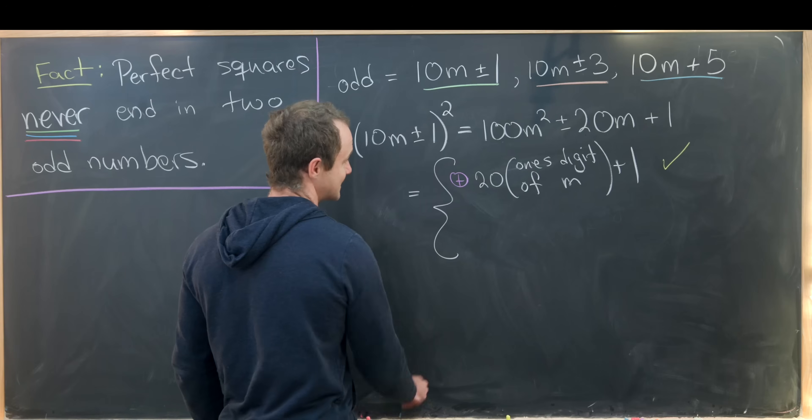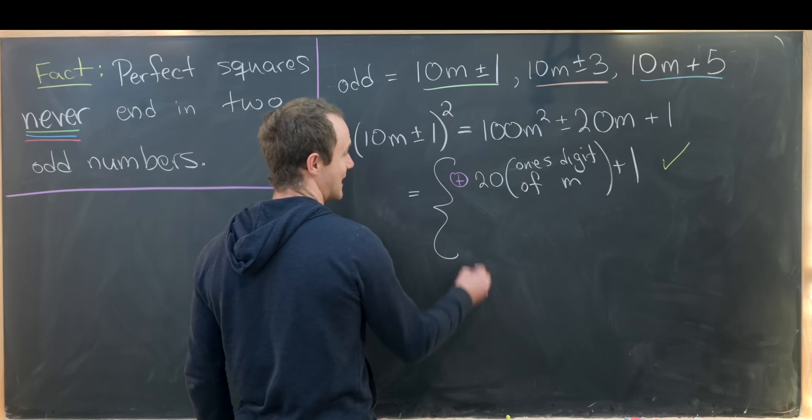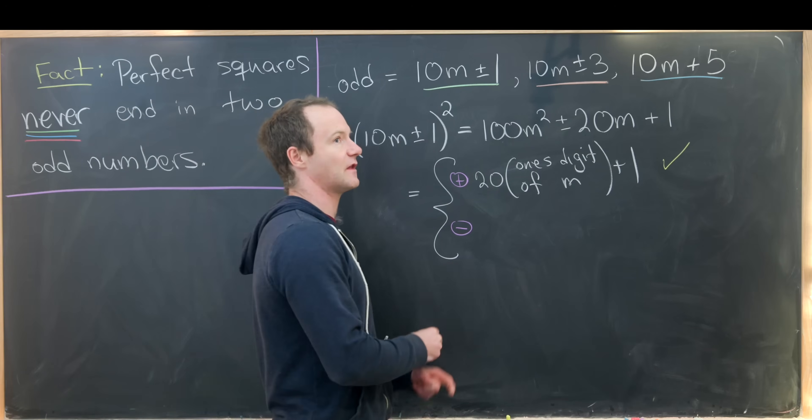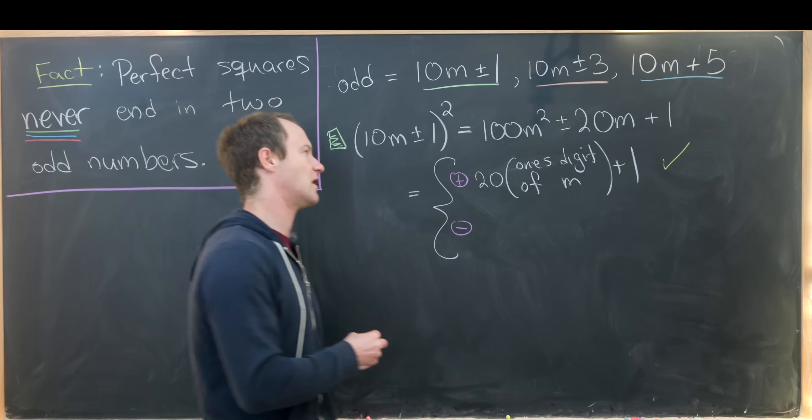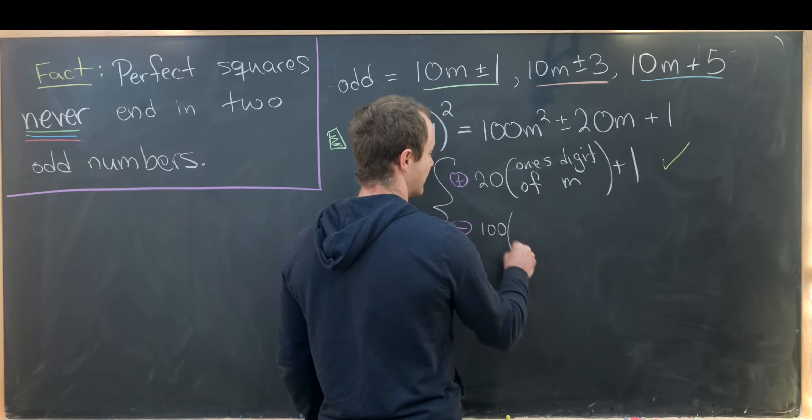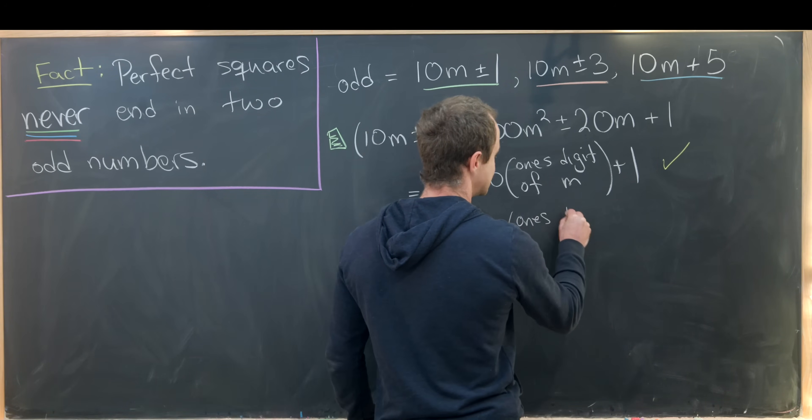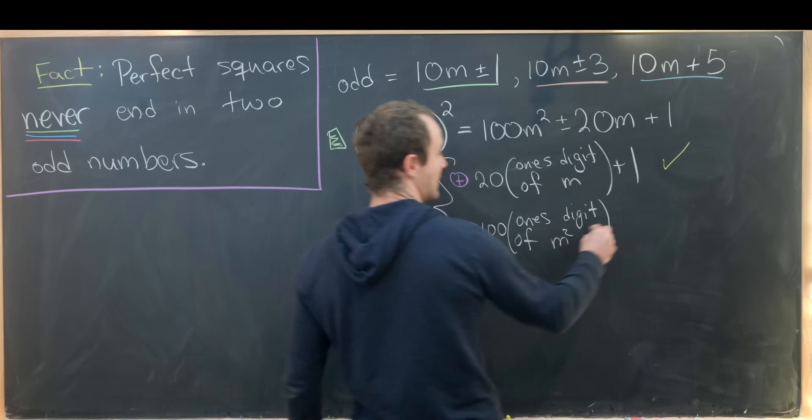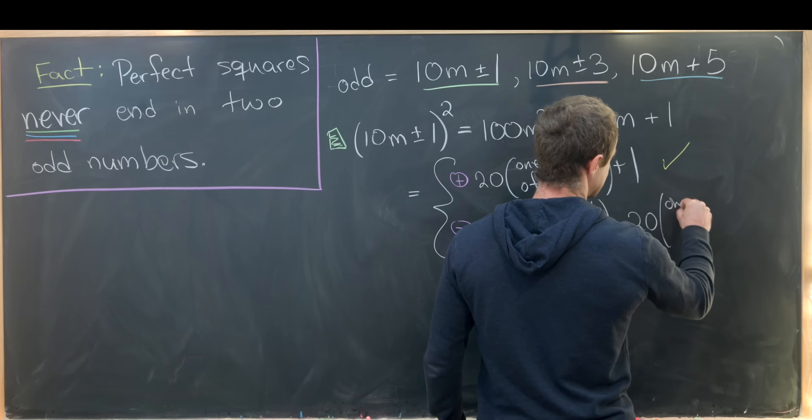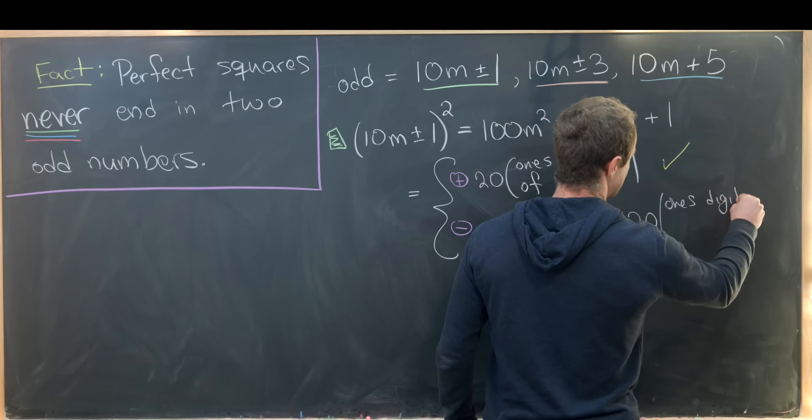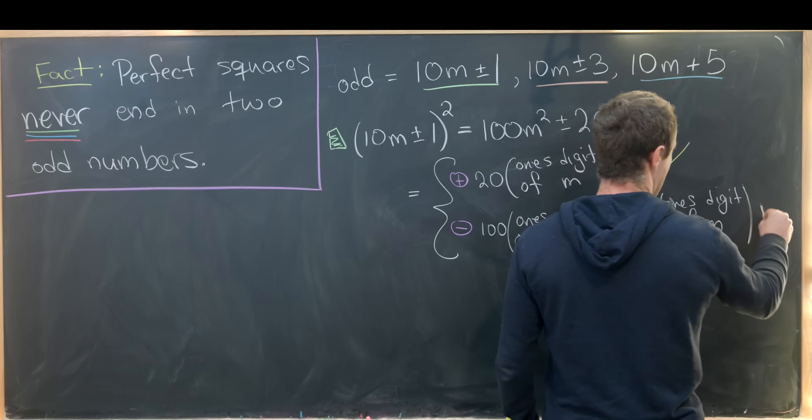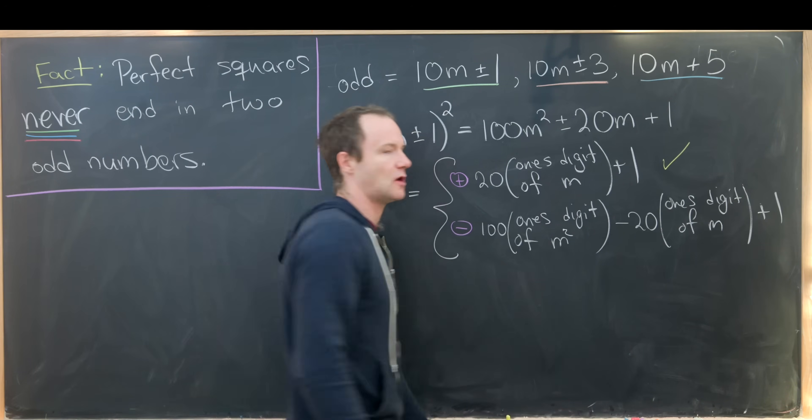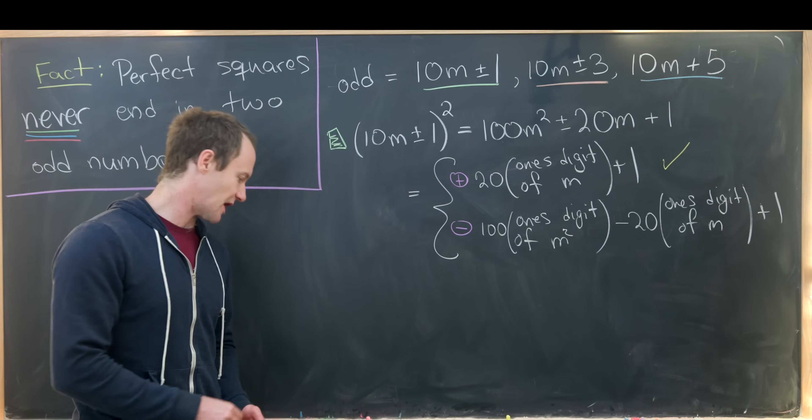And now let's look at the next case. So that'll be the case when we have a minus sign here. But if we've got a minus sign here, then the last two digits will be built up of the following pieces. So we'll have 100 times the one's digit of m squared, and then minus 20 times the one's digit of m, and then plus one. But then through similar reasoning, this object will always end in an even number and then an odd number.